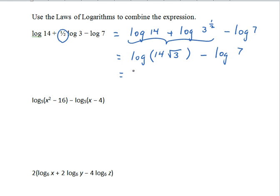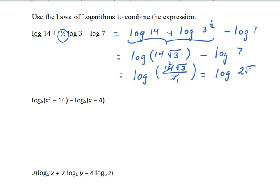And so we're going to have the quotient rule in play now. So we can do log of the quotient of 14 square root of 3 divided by 7. The 7 cancels into the 14 to get the log of the quantity 2 square root of 3.